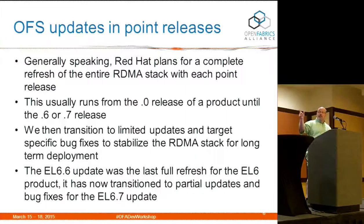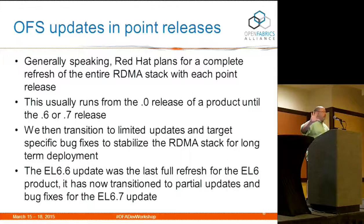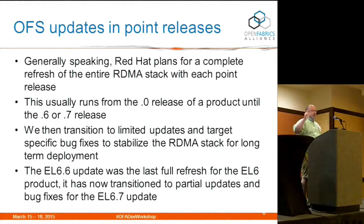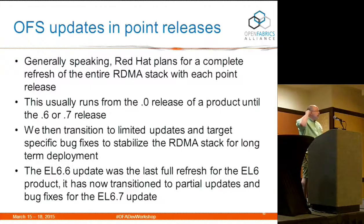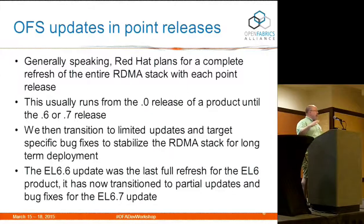That's the standard path we like to follow, and that's usually because by the time we get to the .6 or .7 release, we're around the .2 or .3 release of the next major version. By that point, we really want people looking to the next major version for new features. By the time you get to the .6 or .7 release, those same new features, if you try to bring them back, often start to become destabilizing to the overall kernel — you're talking about kernel infrastructure missing, things you have to work around. So your back-port load goes way up, your risk goes way up, and it's not really worth the payback.